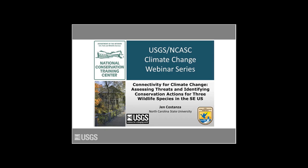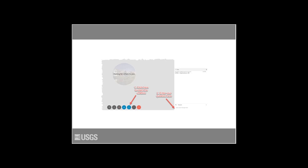Welcome from the U.S. Fish and Wildlife Service's National Conservation Training Center in Shepherdstown, West Virginia. My name is John Osana, and I'd like to welcome you to our webinar series held in partnership with U.S. Geological Survey's National Climate Adaptation Science Center. Today's webinar is titled 'Connectivity for Climate Change: Assessing Threats and Identifying Conservation Actions for Three Wildlife Species in the Southeast United States.' We're excited to have Jen Costanza from North Carolina State University with us today.